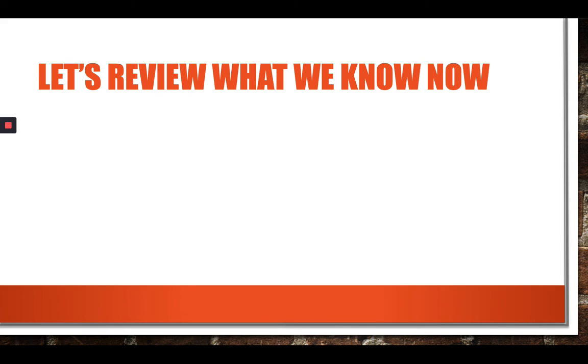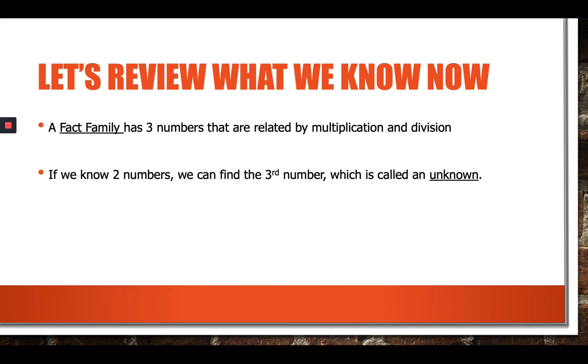So let's review what we know now. A fact family has three numbers that are related by multiplication and division. If we know two numbers, then we can find the third number, which is called an unknown. And if we know two numbers in that fact family, we can find the third number. And fact families can be proven with arrays.